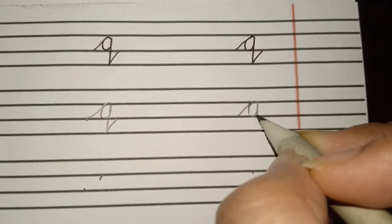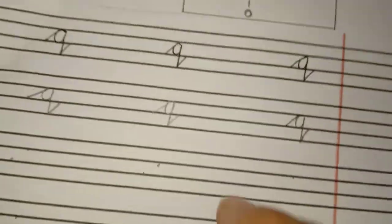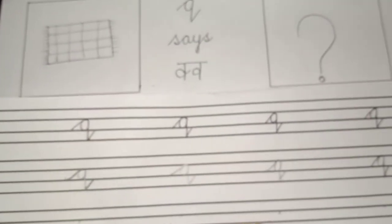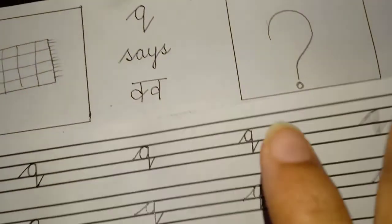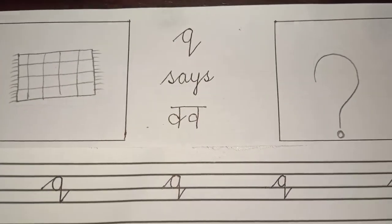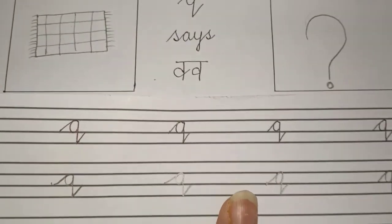Slanting line up. So children, I hope this is clear to you. This is very easy. All of you can do this. And children, the picture is also very easy. Thank you.